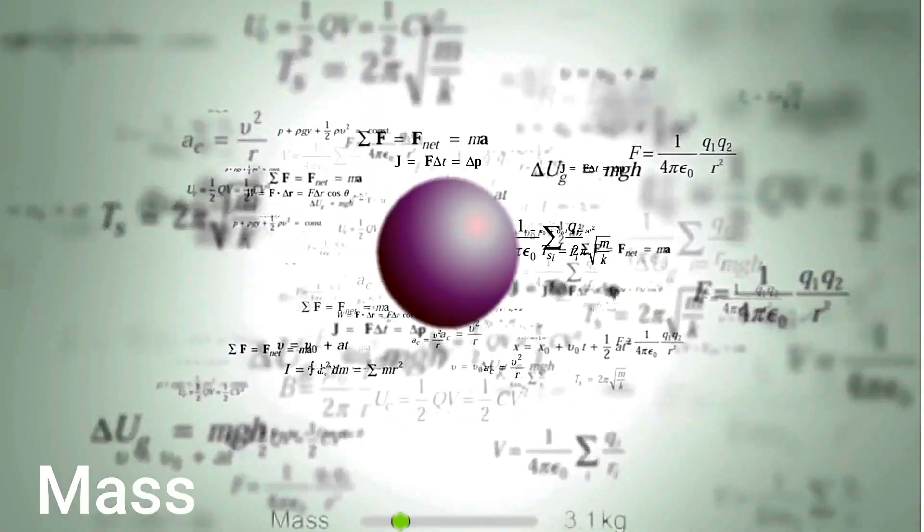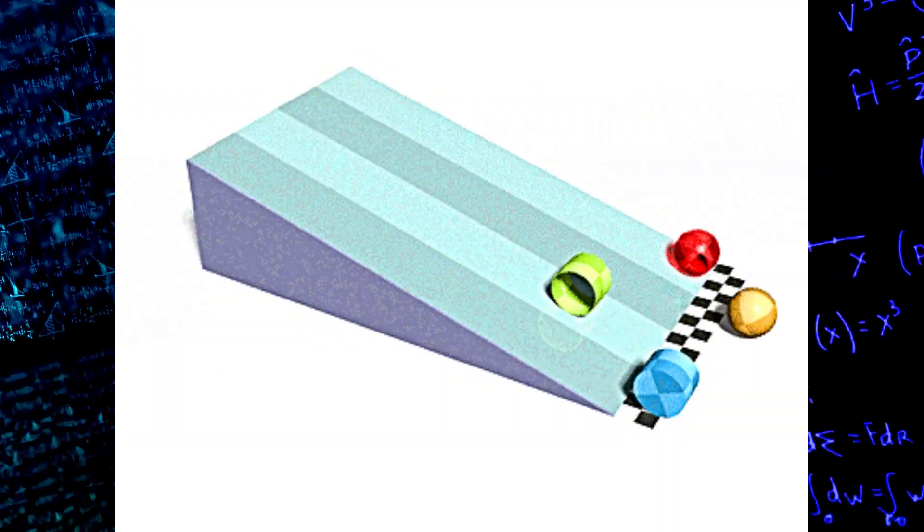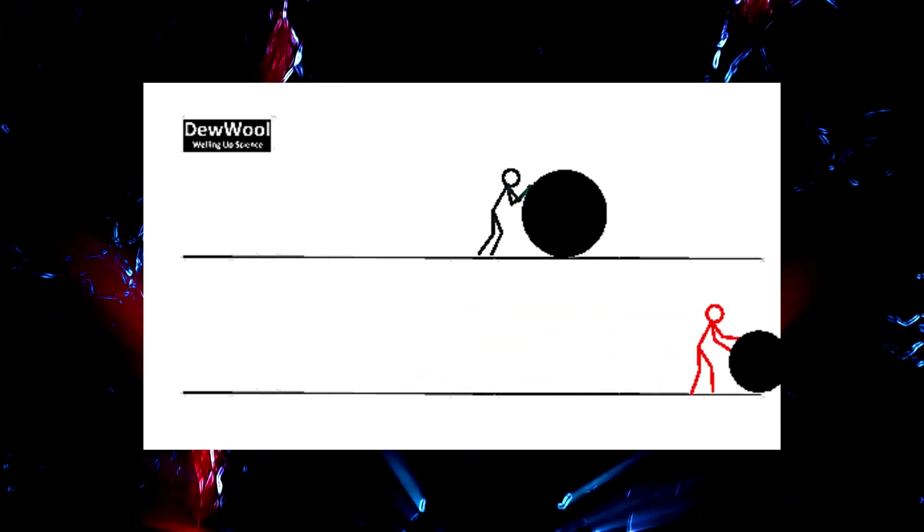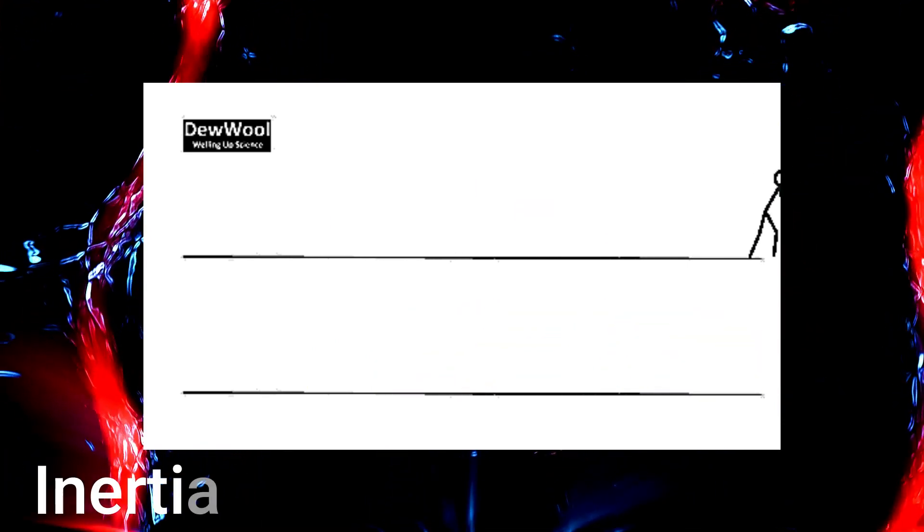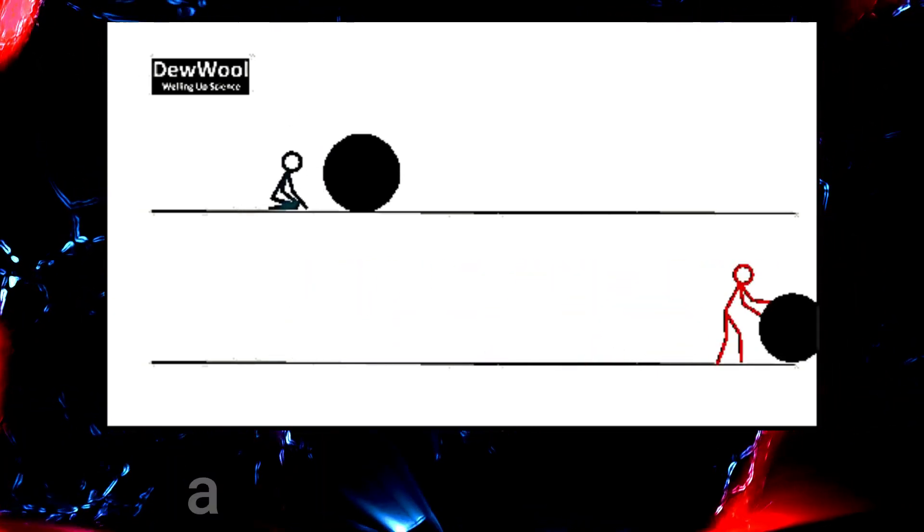Let's start by understanding what mass is. In physics, mass is a fundamental property of particles that measures their resistance to changes in motion. This resistance to changes in motion is known as inertia. The more mass a particle has, the more it resists changes in its motion.